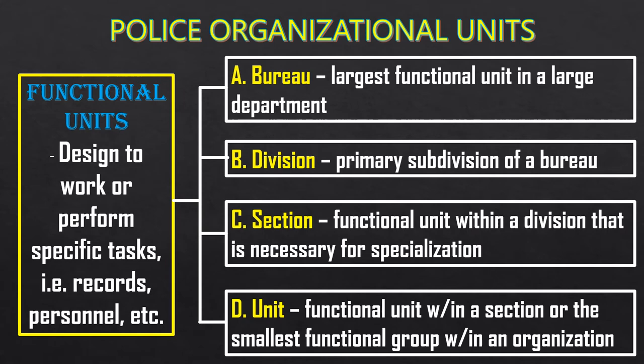These are the police organizational units. We have functional units, line units, and geographical or territorial units. The functional units are the divisions, bureaus, sections, and offices that are designed to perform specific tasks such as records management, personnel, and other administrative work, as well as the operational functions of the police organization.